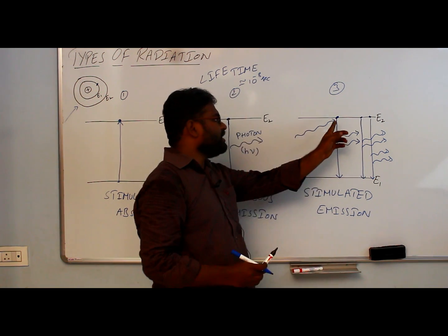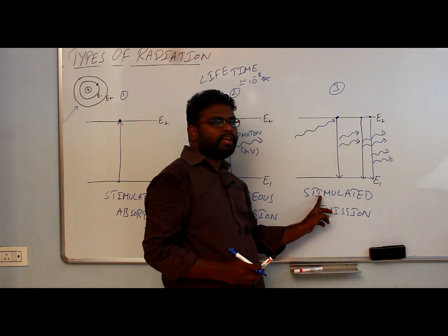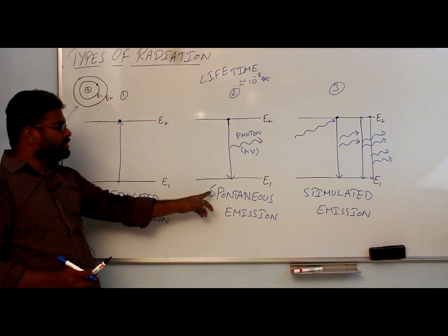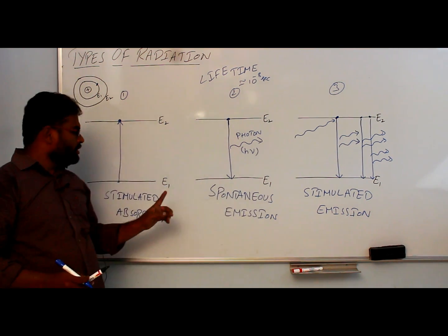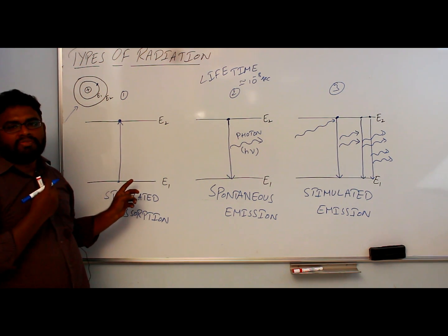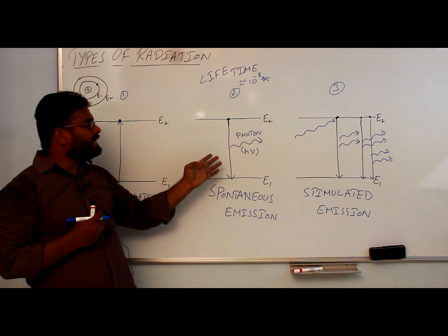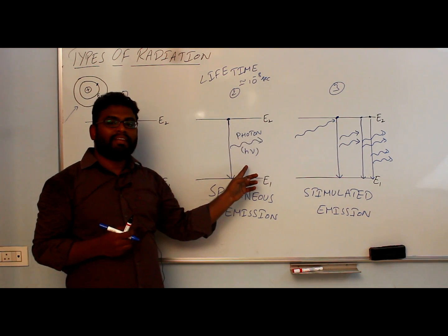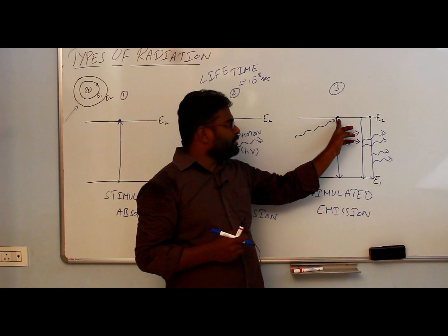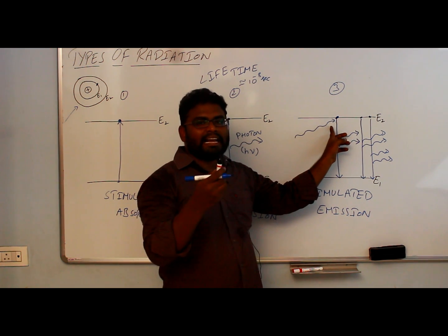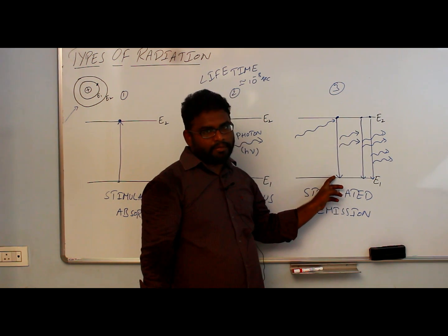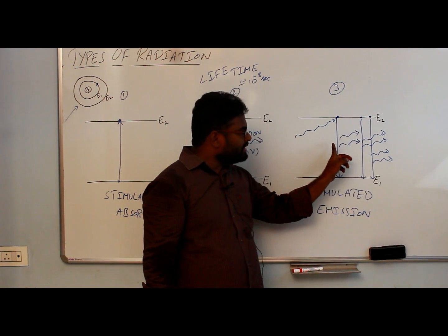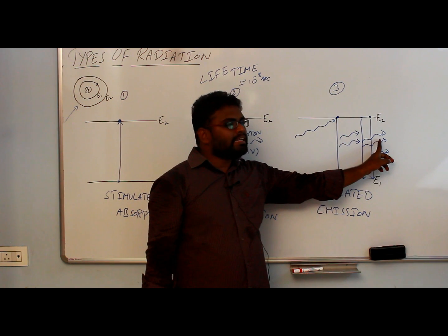We are supplying energy to the system — that's why it is called stimulated; energy is emitting — that's why it is called emission. So basically we have three types of radiations: stimulated absorption, spontaneous emission, and stimulated emission. In stimulated absorption, by supplying energy, electrons go to the excited state. In spontaneous emission, the excited electron comes down automatically emitting energy — the emitted photon has no particular direction. In stimulated emission, the emitted light has a particular direction.